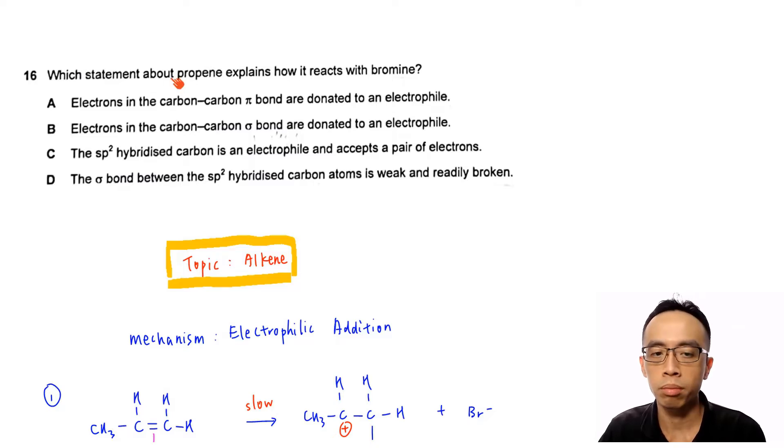Now question 16: which statement about propene explains how it reacts with bromine? Propene is an alkene, so reaction with bromine should be electrophilic addition reaction. Statement A: electrons in the carbon-carbon pi bond are donated to an electrophile. Statement B: electrons in the carbon-carbon sigma bond are donated to an electrophile. C: the sp2 hybridized carbon is an electrophile and it accepts a pair of electrons. D: the sigma bond between the sp2 hybridized carbon atoms is weak and readily broken.